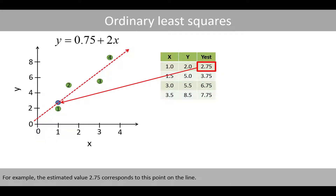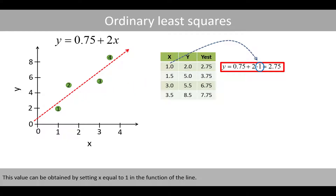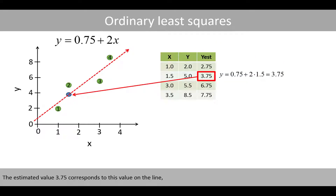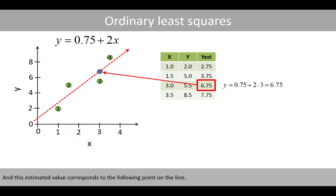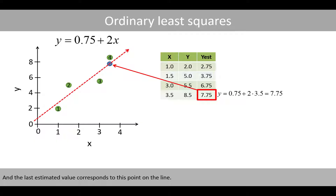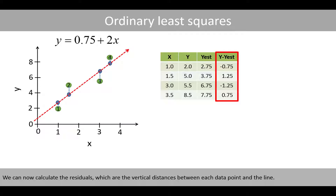For example, the estimated value 2.75 corresponds to this point on the line. This value can be obtained by setting x equal to 1 in the function of the line. The estimated value 3.75 corresponds to this point on the line, which can be calculated by setting x equal to 1.5 in the function of the line. And this estimated value corresponds to the following point on the line, and the last estimated value corresponds to this point on the line.